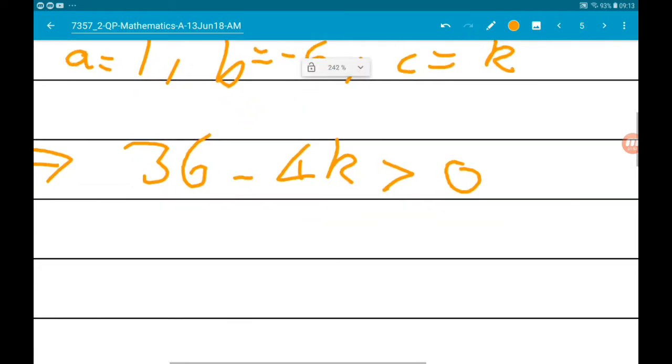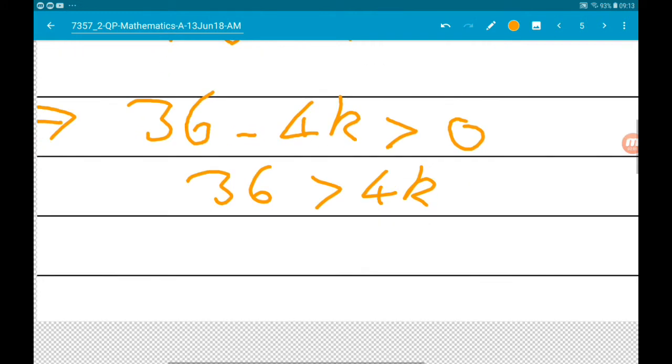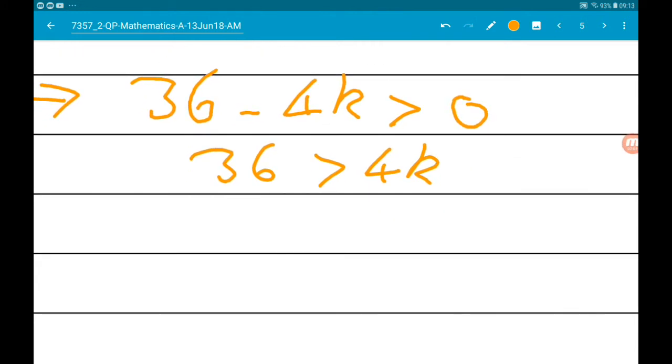Now, if we add 4k, we get 36 is greater than 4k. And then divide by 4, we get 9 is greater than k.